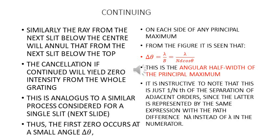When the ray from the top and the ray from the center are displaced by an additional angle Δθ, they mutually cancel each other's effect. Similarly, the ray from the next slit below the center will annul the effect of that from the next slit below the top. This cancellation, if continued, will yield zero intensity from the entire grating — a process similar to what happens in a single slit.